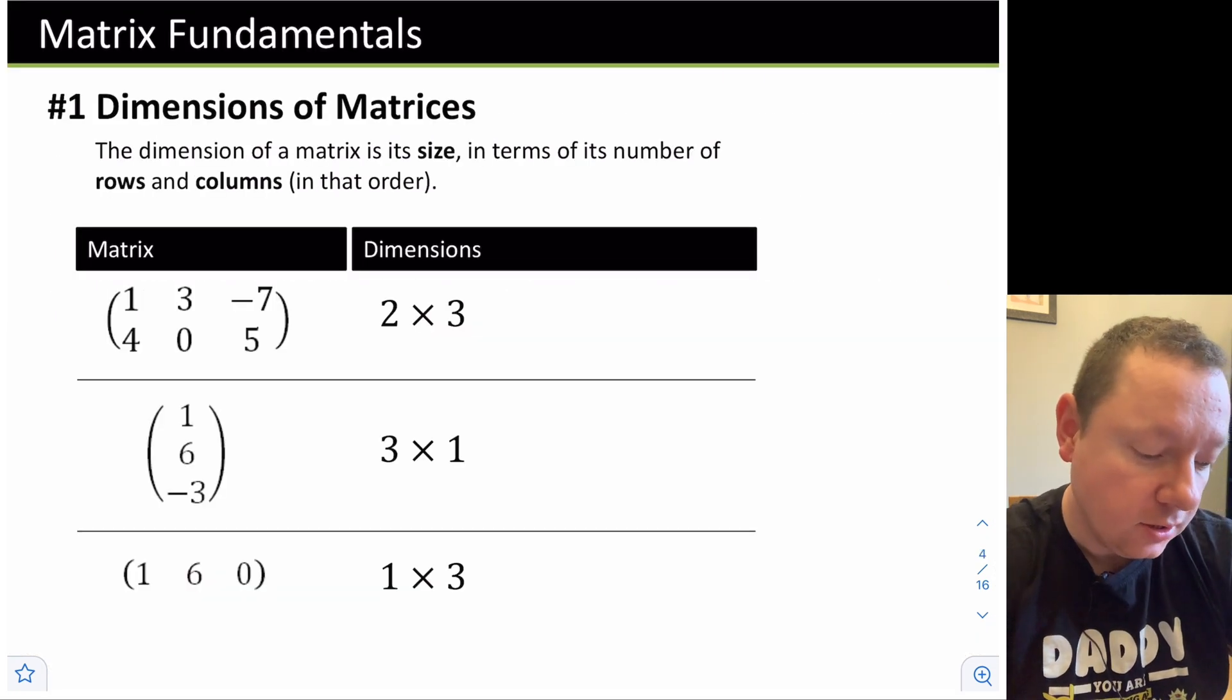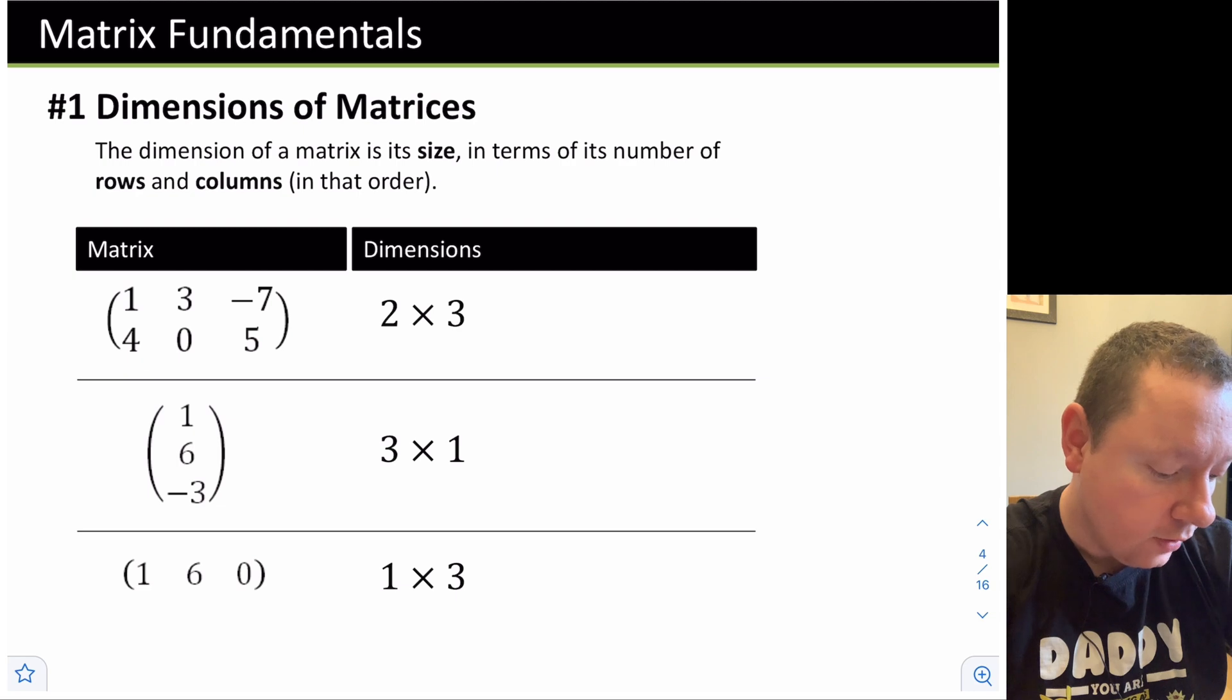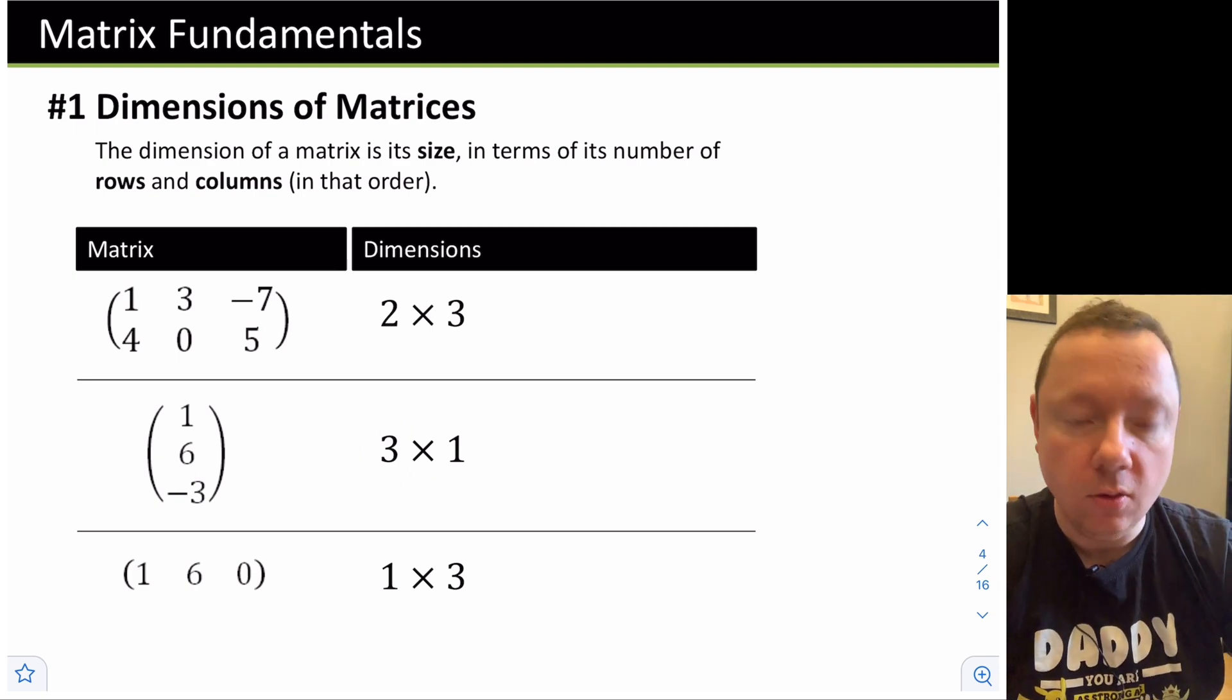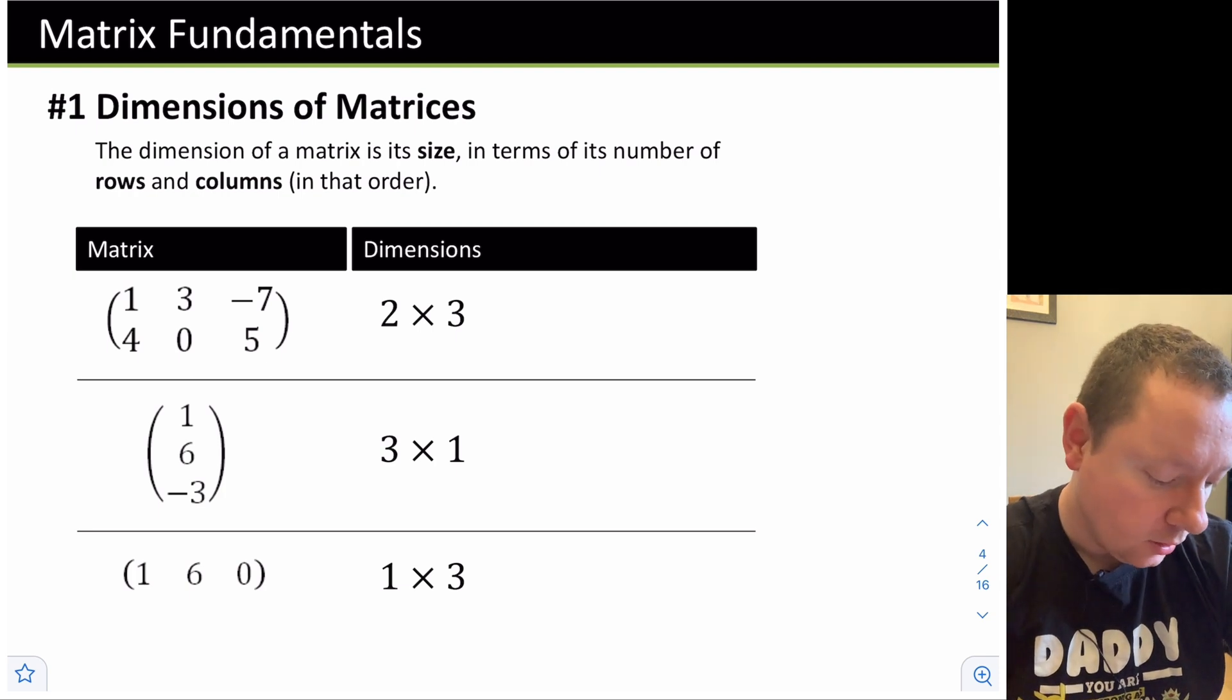The dimensions of a matrix is its size, in terms of its number of rows and columns in that order. For instance, if you take this matrix 1, 3, -7, 4, 0, 5, it's got 2 rows and 3 columns, so it's a 2 by 3 matrix. Similarly, the second matrix has 1, 2, 3 rows, so it's 3 by 1 because it's got 1 column. And this third matrix has just 1 single row but 3 columns, so it's a 1 by 3 matrix. Row times columns is the order of a matrix.